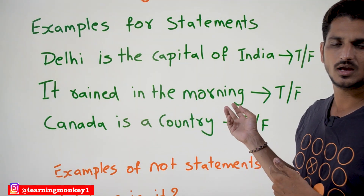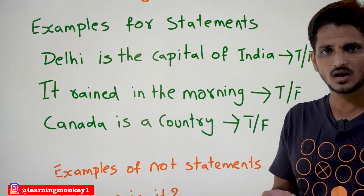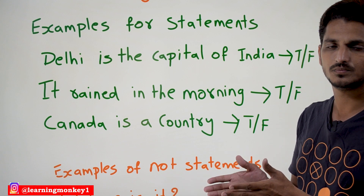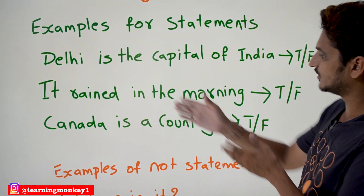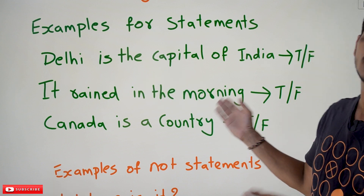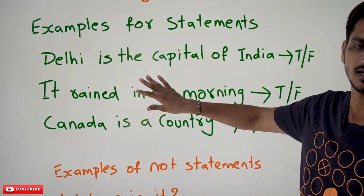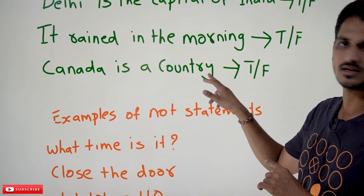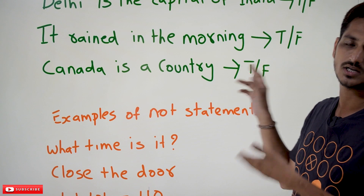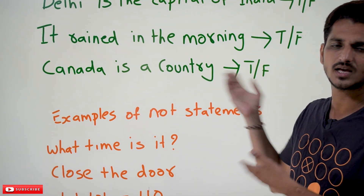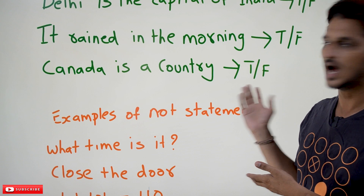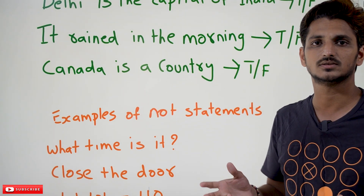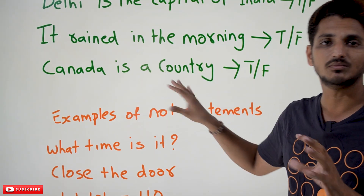'It rained in the morning.' If it rained in the morning, you say true. If it did not rain in the morning, you say false. Yes, this is a statement. 'Canada is a country.' If it is a country, you say true. If it is not a country, you call it false. And you cannot divide this sentence into two simpler sentences. That's why we call this a statement.